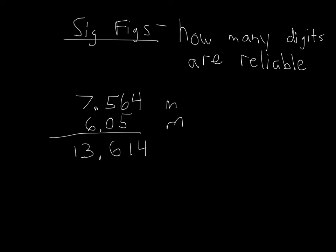When I'm adding numbers, and when I'm particularly adding measurements, I can't be any more precise than my least precise measurement. My least precise measurement is this 6.05 right here. It's only precise out to the hundredths place. So my final measurement can't be more accurate than that hundredths place, so I have to round. My final measurement, after I add these two measurements together, would equate out to 13.61.